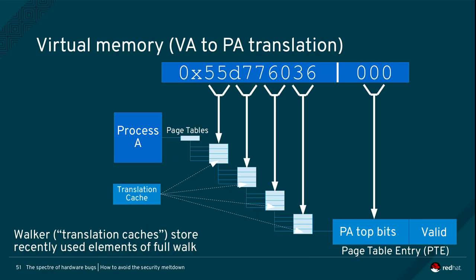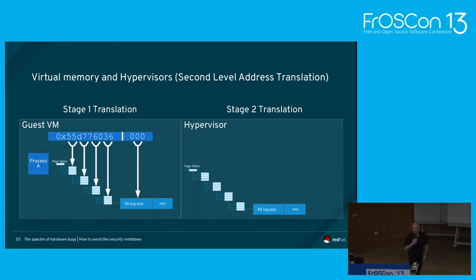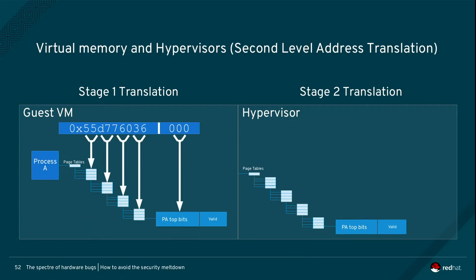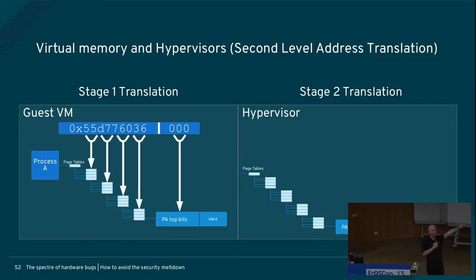We also have translation caches that store little bits of these tables to make lookups even faster — these are also vulnerable to a nice attack I don't have time to describe today. When you're running a hypervisor or virtual machine, you may do this translation twice. If you're running your machine in the cloud, the hypervisor takes the happy view of memory that the virtual machine has and translates what the VM thinks is physical memory one more time to what it actually thinks is physical memory — and if it doesn't do this, really bad things can happen.